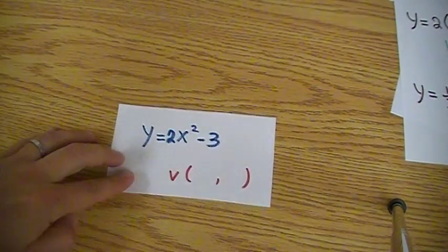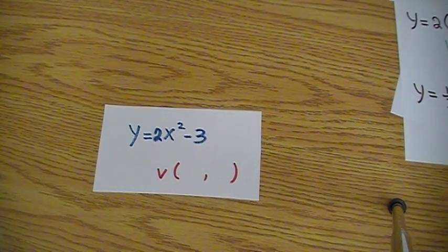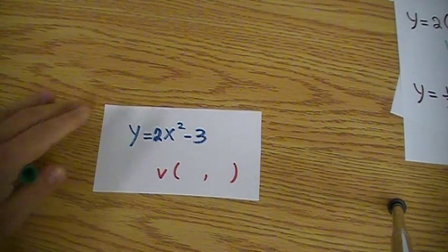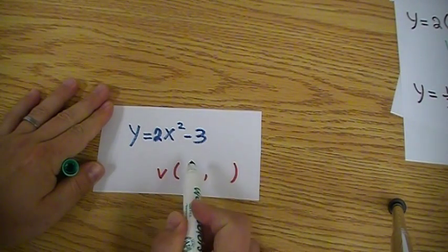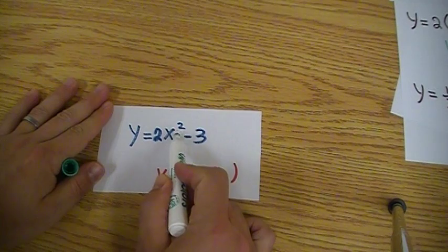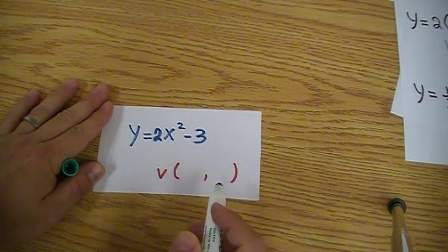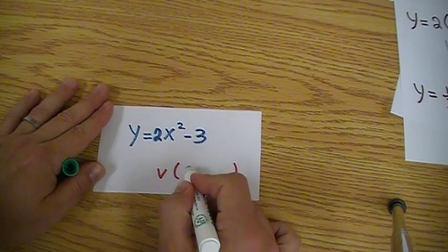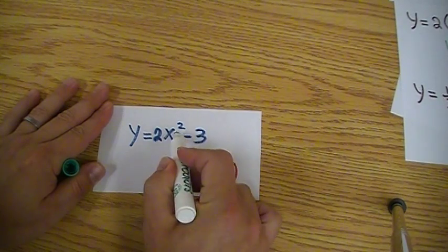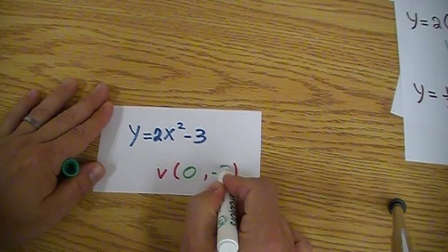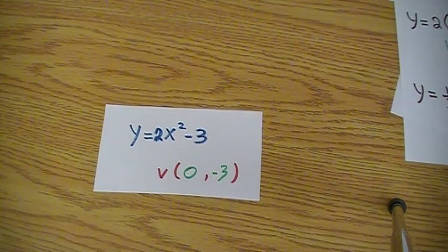What about this function right here, 2x squared minus 3? You can notice that there are no brackets around it, so this must be x minus 0, and then the minus 3 goes outside the bracket. So that must be a 0 for the h value, and the k value is the minus 3.